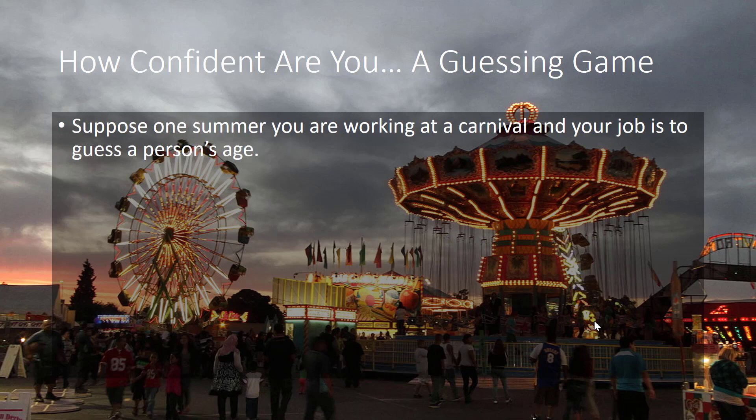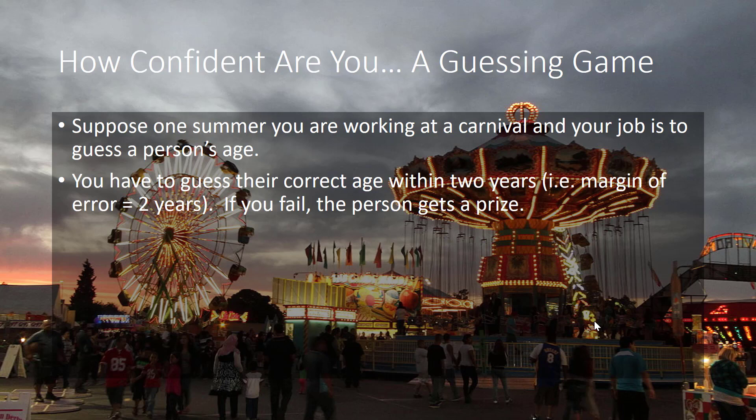Suppose one summer you are working at a carnival and your job is to guess a person's age. You have to guess their correct age within two years. That means your margin of error is two years. If you fail, then the person gets a prize.